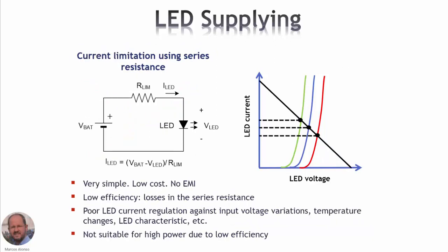The typical solution to avoid this problem is to add a series resistance, as shown here, in order to limit the current to the required value. We can then use different values for the input voltage. In this way, we are increasing the output resistance of our voltage source. The characteristic is shown here in black, and we can see that the change of the current from the nominal point when the LED characteristic changes is much lower.